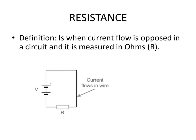Let us now have a look at resistance. The definition of resistance is as follows: It is when current flow is opposed in a circuit and is measured in ohms, also indicated by the capital letter R.